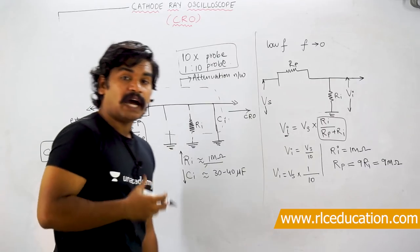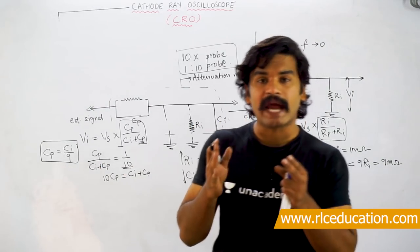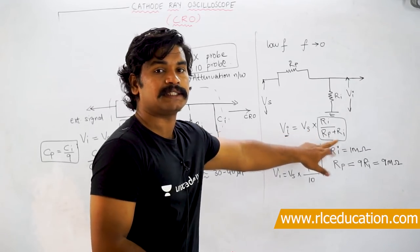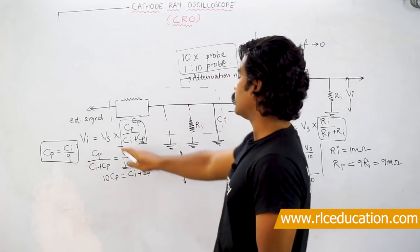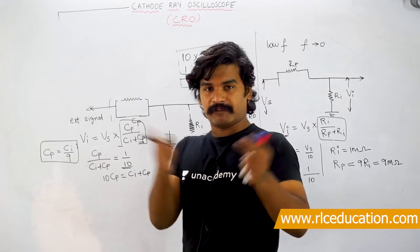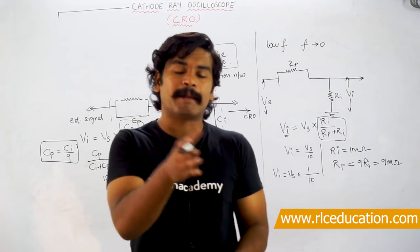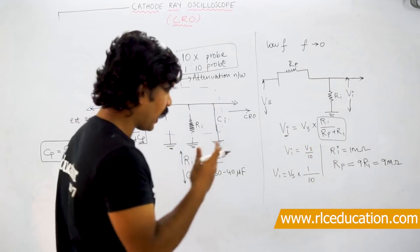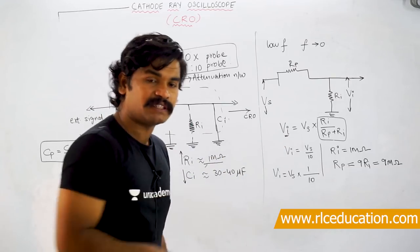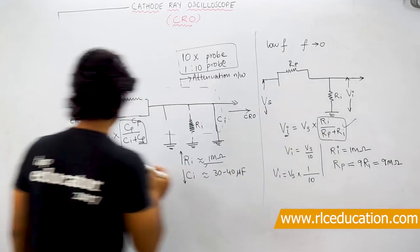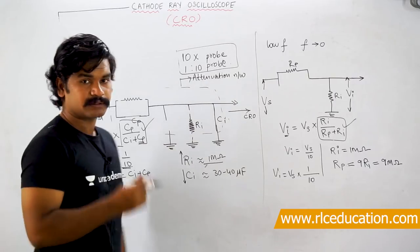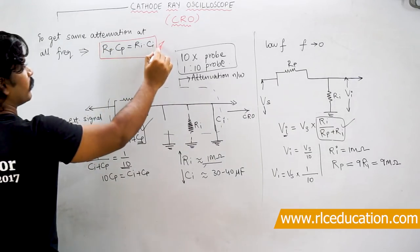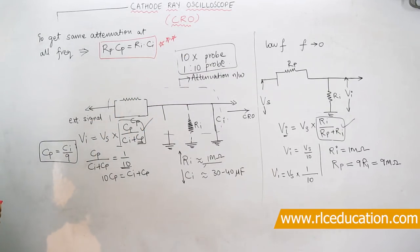To maintain constant attenuation under both low and high frequency conditions, we equate both attenuation factors. The result is: to get the same attenuation at all frequencies, the time constant of the probe must equal the time constant of the CRO. This is a very important relation because exam problems are directly based on this.